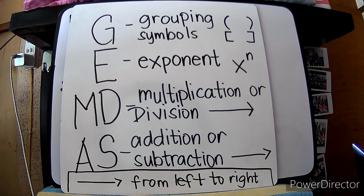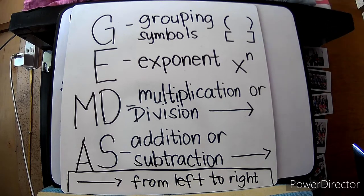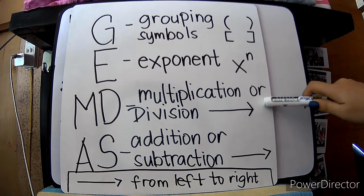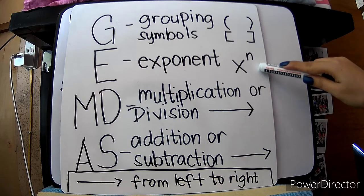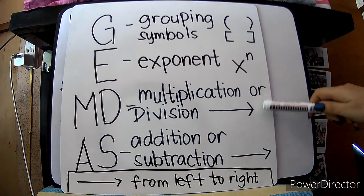So, first, check if we have grouping symbols. If there's an operation inside our parentheses or bracket, yun muna yung unang nating gagawin. But of course, sa loob nun, pwedeng magkaroon ng exponent, pwede pong magkaroon ng multiplication or division, and also addition or subtraction. Do exponent first if there is one. If none, proceed to MD or AS.